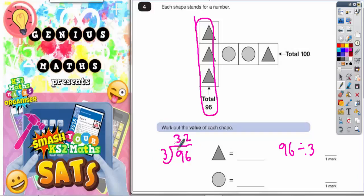That's quite an easy one to do. So if you split 96 into three equal triangles, you're going to get 32 in each of those triangles. So this triangle is worth 32, this triangle is worth 32, and this triangle is worth 32. Three times 32 gets you back to 96.